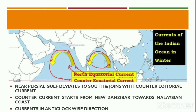The Counter Equatorial Current starts moving from the Zanzibar region towards the Malaysian coast. Thus the currents of the northern part of the Indian Ocean during the winter season have an anti-clockwise movement.